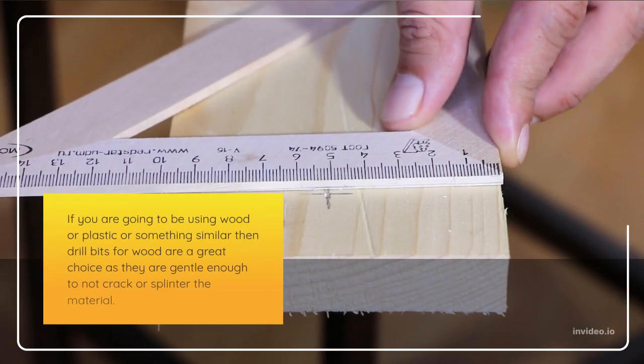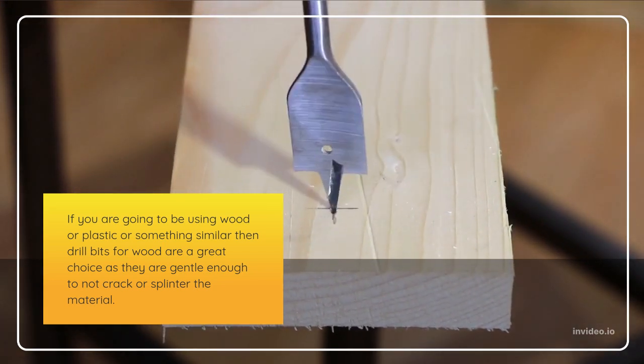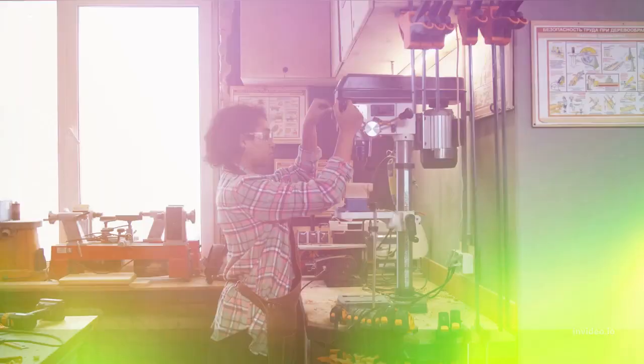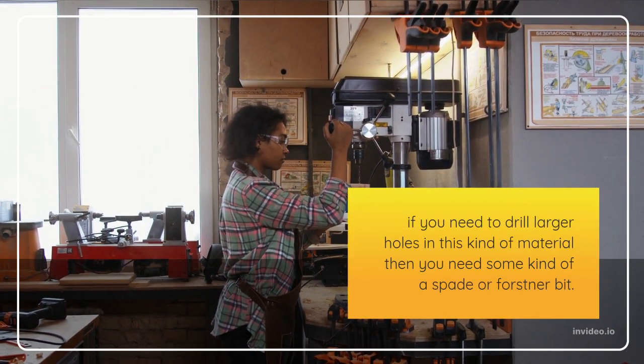If you are going to be using wood or plastic or something similar, then drill bits for wood are a great choice as they are gentle enough to not crack or splinter the material. If you need to drill larger holes in this kind of material, then you need some kind of spade or forstner bit.